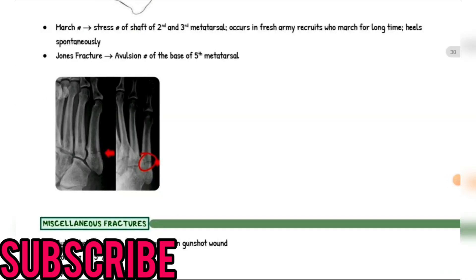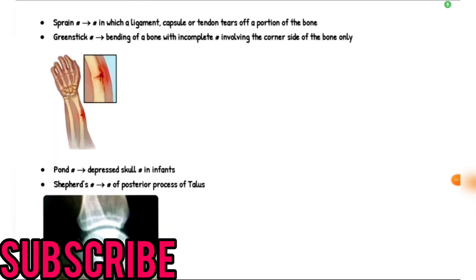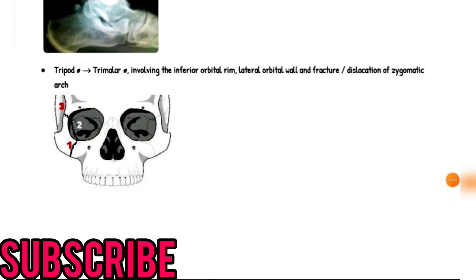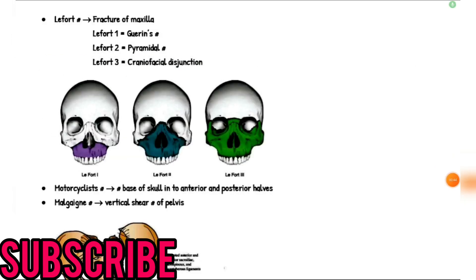Miscellaneous fractures: buttonhole fracture with loss of bone as in a gunshot wound. Cuff fracture: fifth to seventh ribs fracture. Dyscrasic fracture: malnutrition fracture. Sprain fractures: fracture in which a ligament, capsule, or tendon tears off a portion of bone. Greenstick fracture: bending of a bone with incomplete fracture involving only one cortical side. Pond fracture: depressed skull fracture in infants. Shepherd's fracture: fracture of the posterior process of the talus. Tripod fracture (trimalar fracture): involves the inferior orbital rim, lateral orbital wall, and fracture-dislocation of the zygomatic arch. Le Fort fractures: Le Fort 1 (Guérin fracture), Le Fort 2 (pyramidal fracture), Le Fort 3 (craniofacial disjunction).